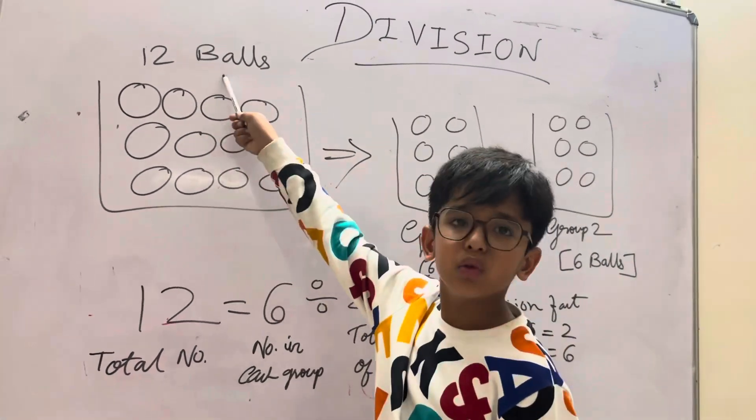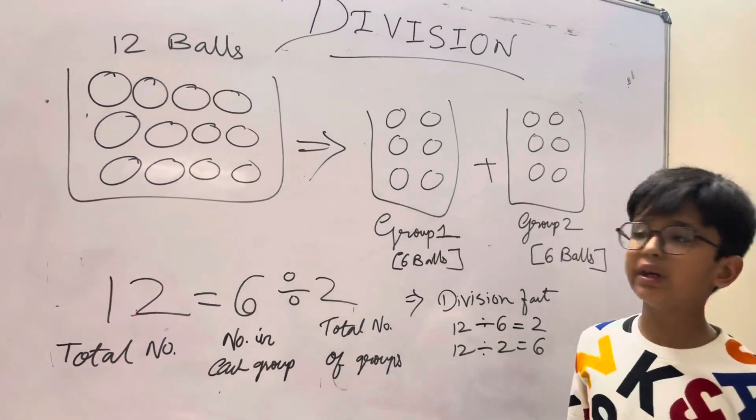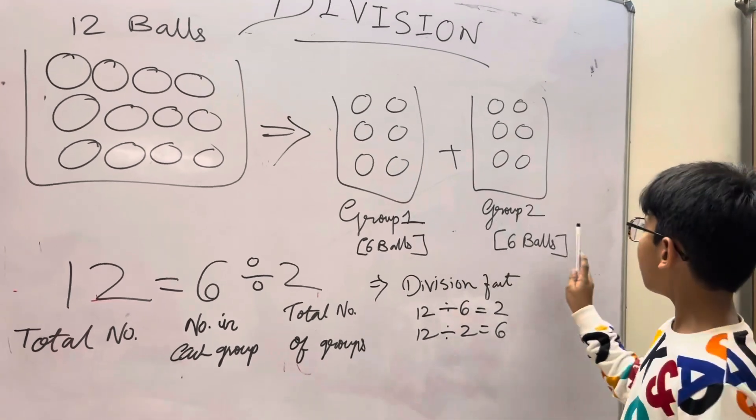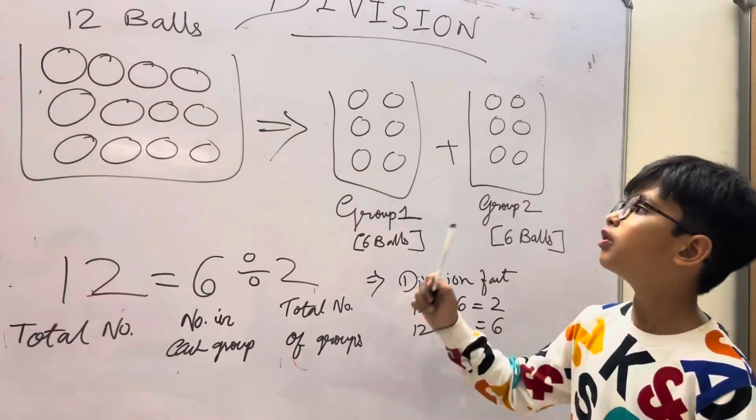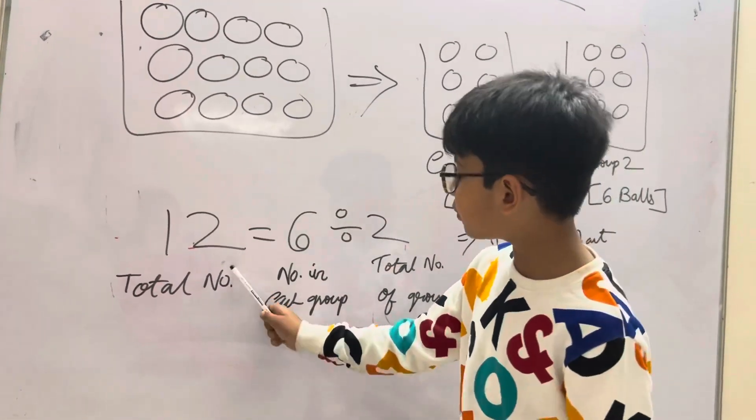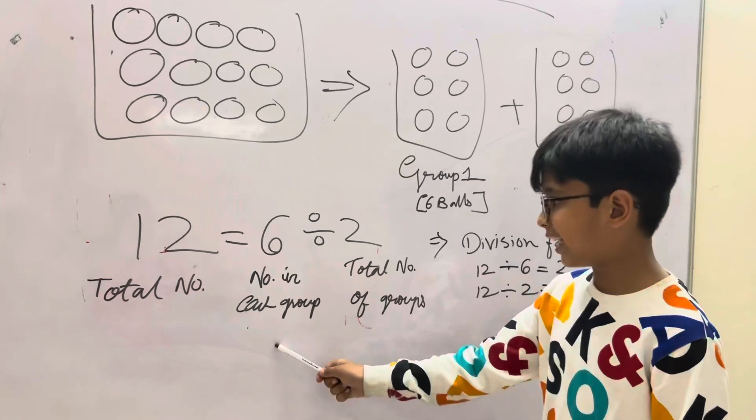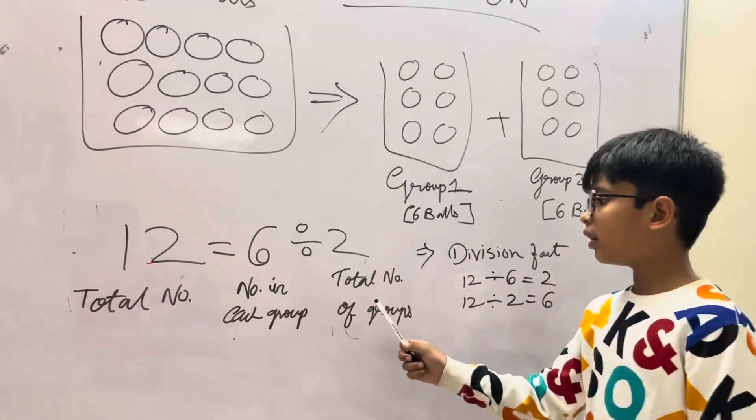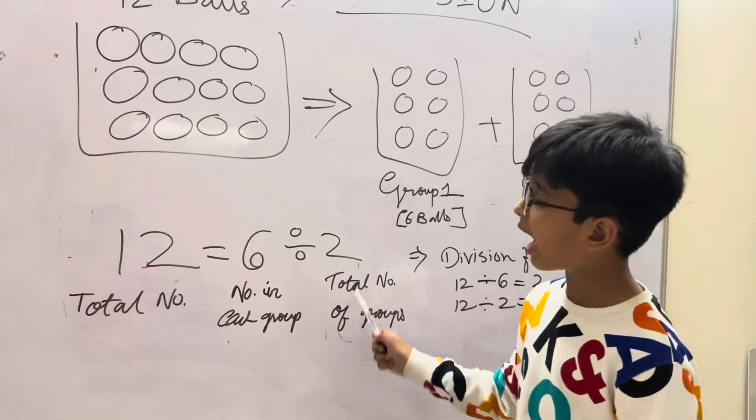So we have 12 balls. We have to divide equally in 2 groups. So in each group 6 balls are there. The total number is 12, number in each group is 6, and total number of groups are 2.